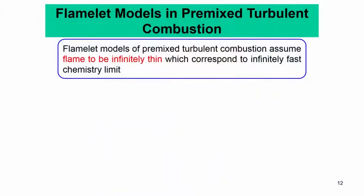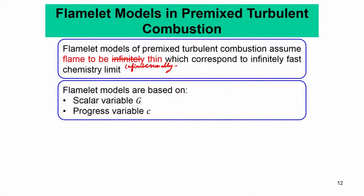There are basically two types of flamelet models we will discuss. The inherent assumption is that the flame is infinitesimally thin, which corresponds to the infinitely fast chemistry limit. This means the characteristic length scale of the flame is smaller than any turbulent structure.